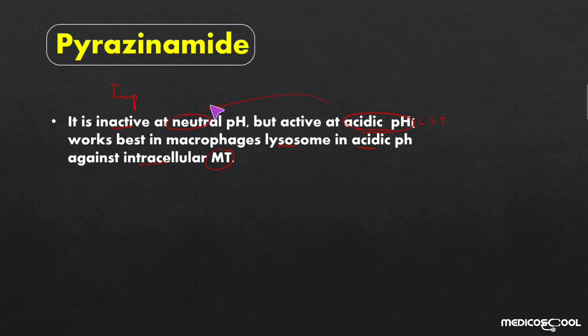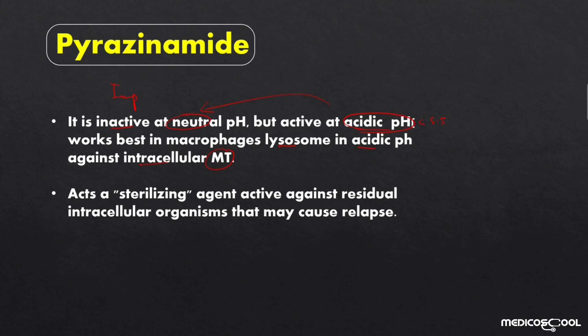It is most active at acidic pH and inactive at neutral pH. Another important point is that it acts as a sterilizing agent against residual intracellular organisms that may cause relapse, and thus it is active against latent tuberculosis.